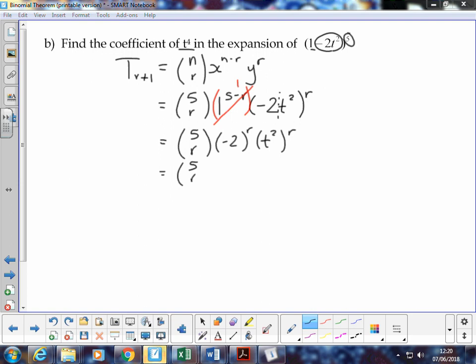And what does that give us? It leaves us with 5 choose r, times negative 2r. Let's simplify this bracket here. t squared to the power r, raising a power to another power, we multiply those two terms together, so it's going to give me t to the power 2r. That's as far as I can simplify it, so that's my r plus 1 term.